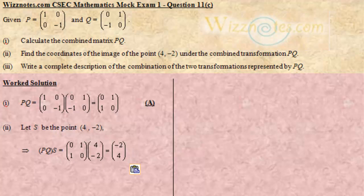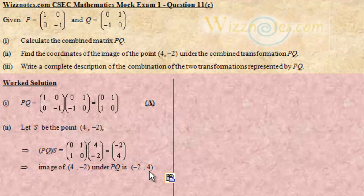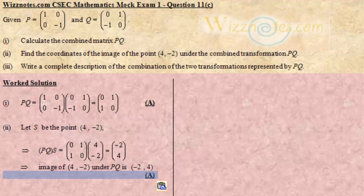Therefore, the image — which is a point — we have to give the coordinates, because the question asks for the coordinates. If the vector of the image is (-2, 4), then the coordinates of the image are (-2, 4) written in coordinate form: x-coordinate, y-coordinate. So (-2, 4) is the image of (4, -2) under PQ.